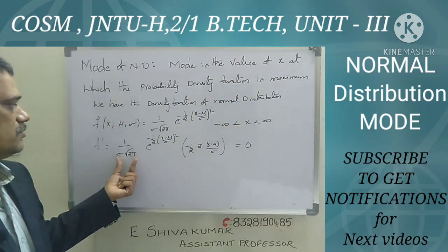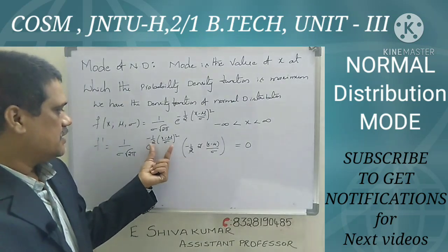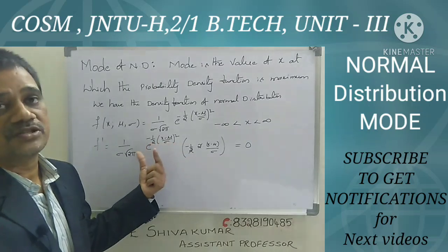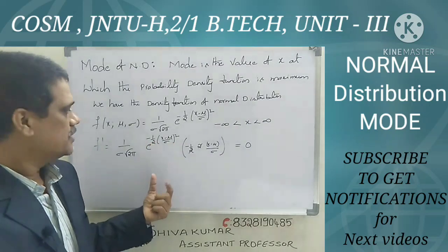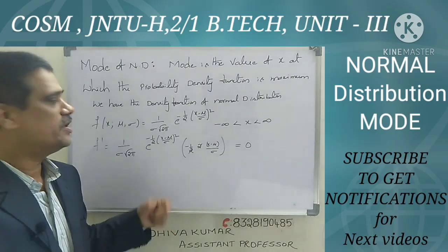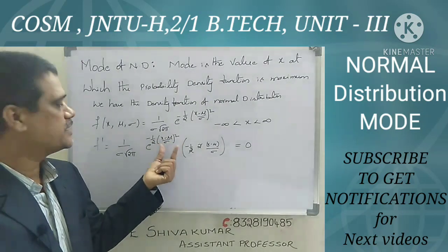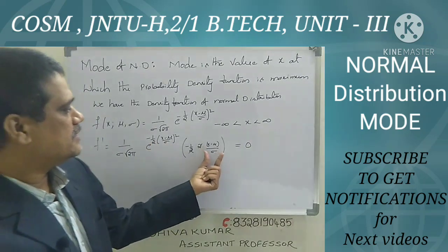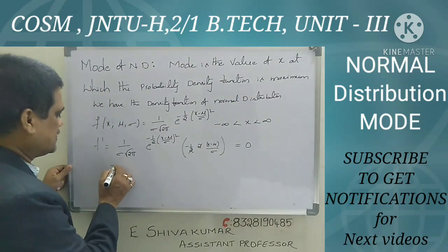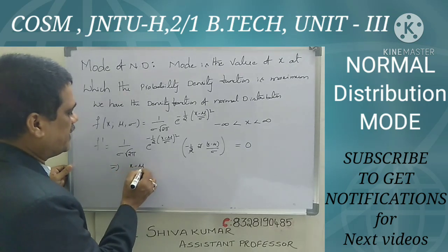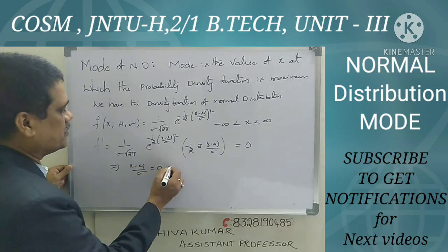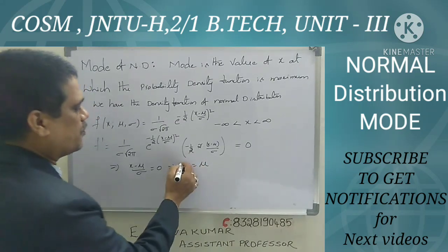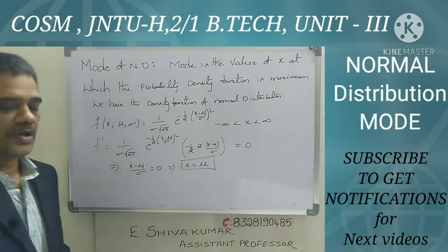Equating f'(x) to zero: the constant 1/(σ√(2π)) cannot be zero, and e^(something) equals zero only if the exponent is infinity — which is not possible. Therefore, the term (x−μ)/σ must equal zero, which implies x = μ.